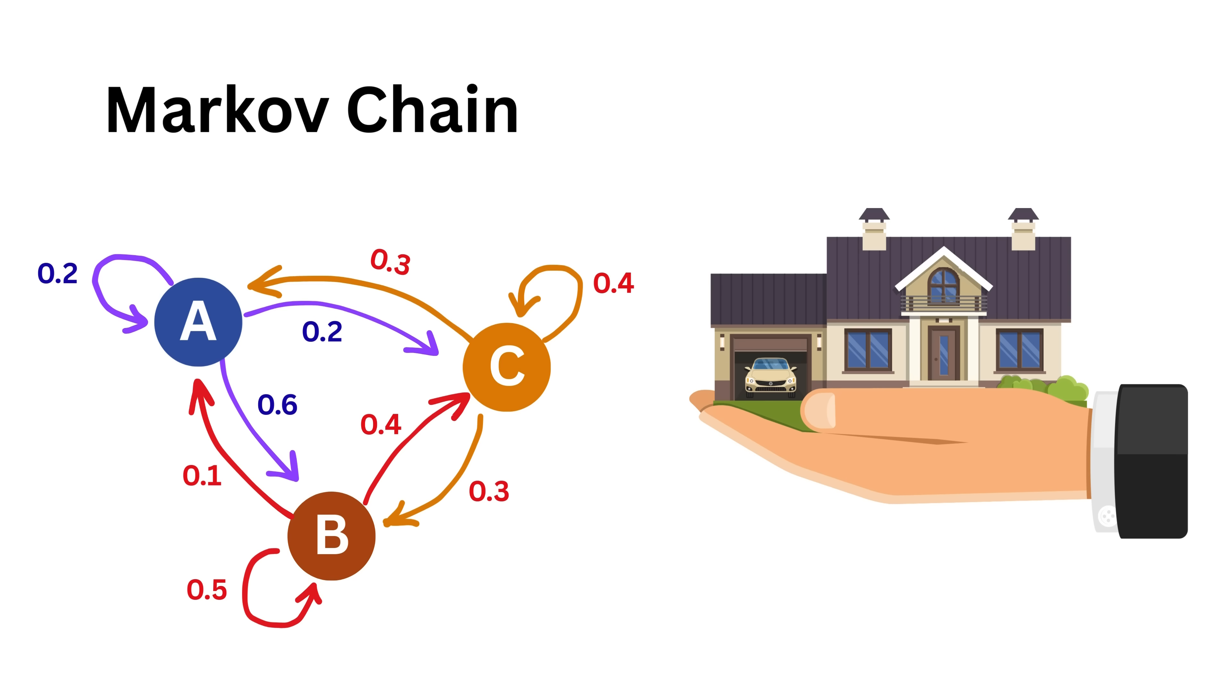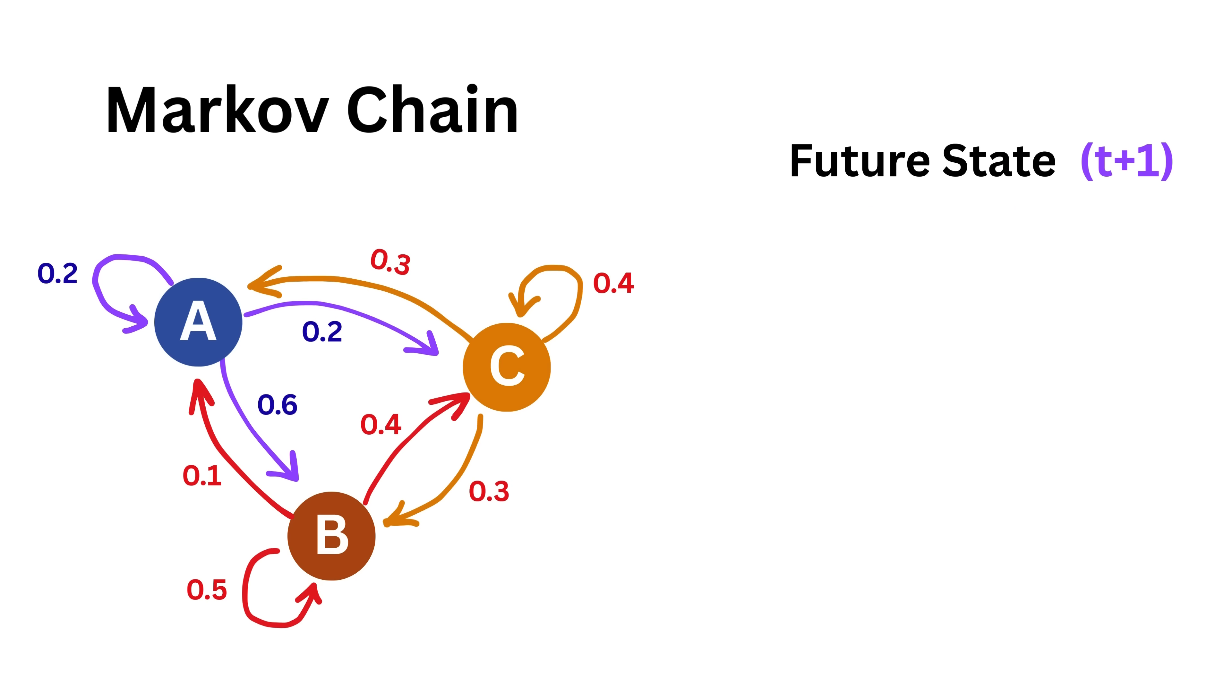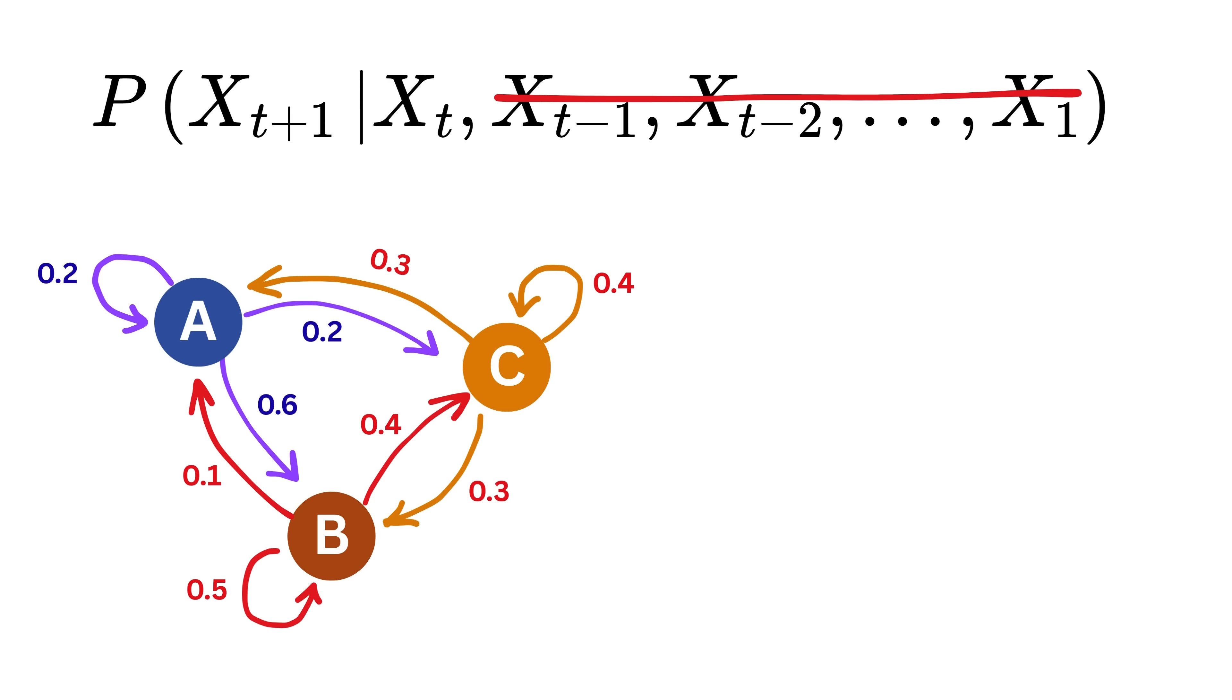Now, let's talk about one very important property of Markov chains. The future state in a Markov chain depends only on the current state and not on the complete sequence of past states. Mathematically, the probability of visiting a certain page depends only on the page the user is on right now, not on the pages they visited before. This is known as the Markov property.